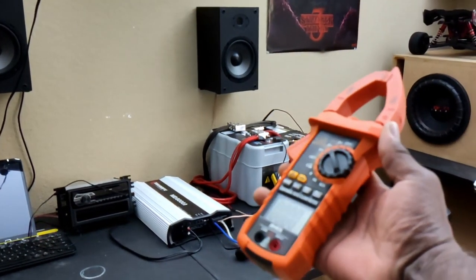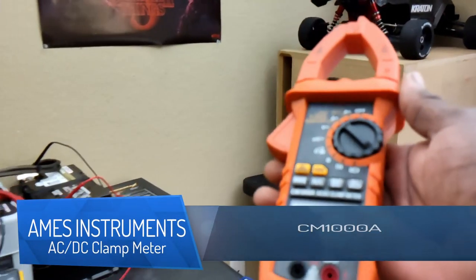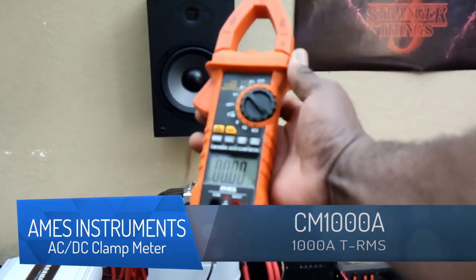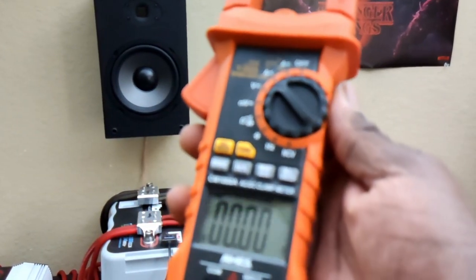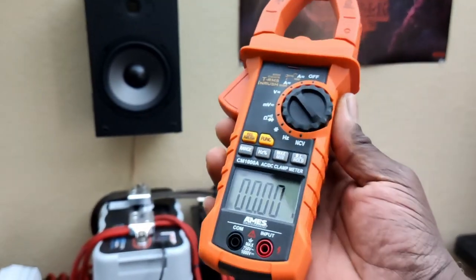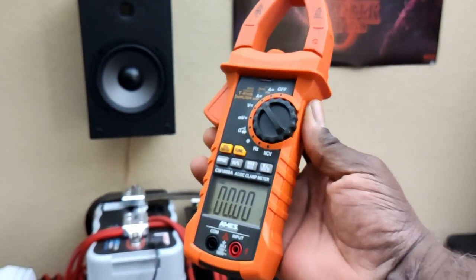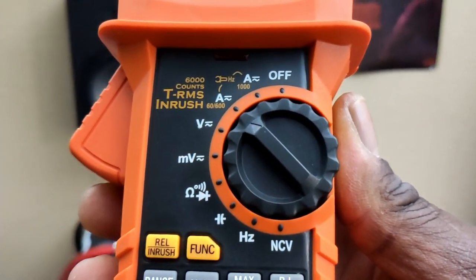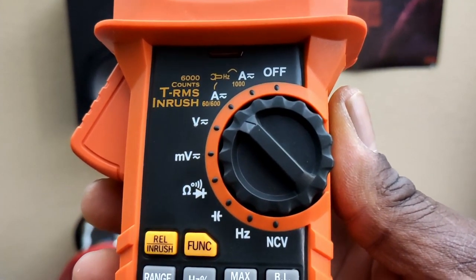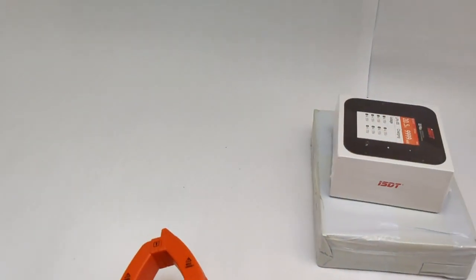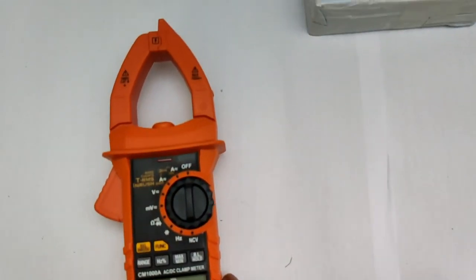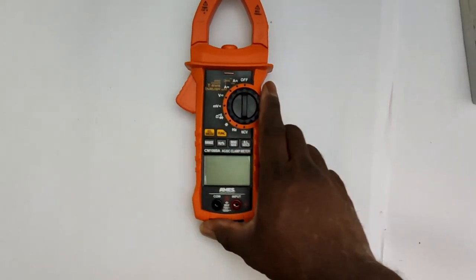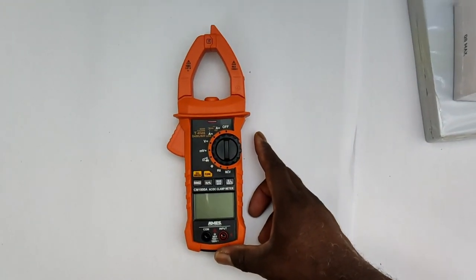Alright guys, so this video here should be quite quick and simple. I want you guys to focus on this device right here. This is a clamp meter. What I'm primarily going to be using this thing for is measuring amperage or amp draw. Let's talk about this guy for a minute.